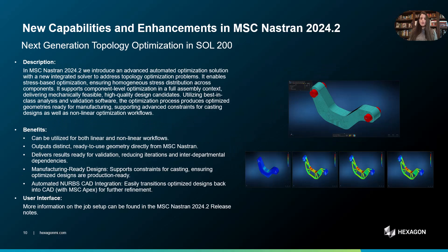In this release, we are introducing the next-generation topology optimization in MSC Nastran in Solution 200, which is a groundbreaking advancement that redefines how engineers approach design optimization. With this automated solution, we ensure stress-based optimization for uniform stress distribution, which supports both linear and non-linear workflows, and delivers manufacturing-ready designs tailored for manufacturing constraints. With seamless NURBS CAD integration, we bridge the gap between optimization and design refinement, and we empower engineers to create high-quality, validated designs with unparalleled efficiency.